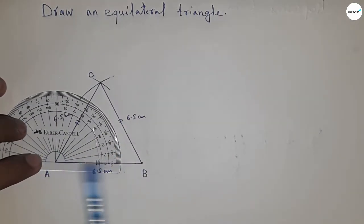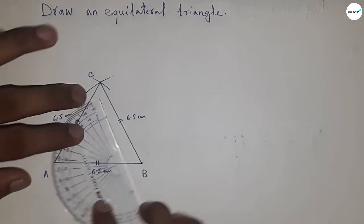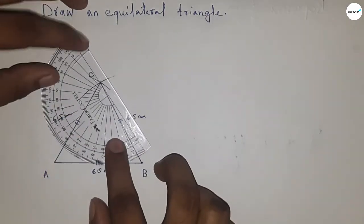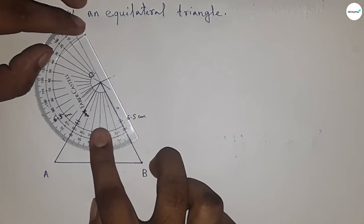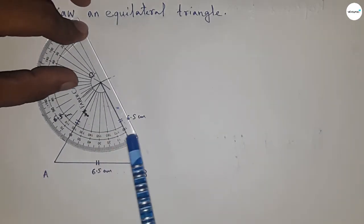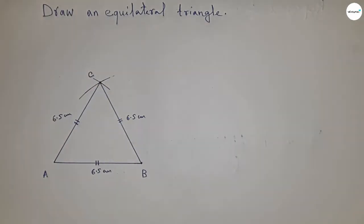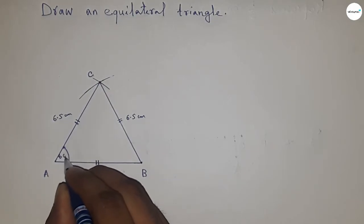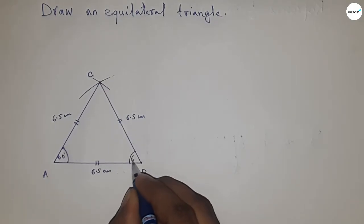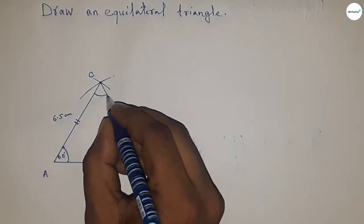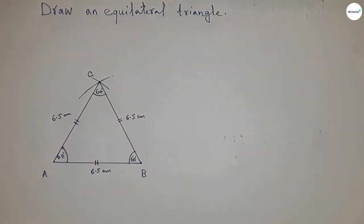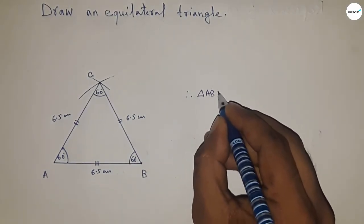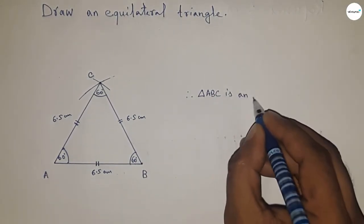So this is 60 degree angle, this is also 60 degree angle, and this is also 60 degree angle. So angle BAC is 60 degrees, angle ABC is 60 degrees, and angle ACB is 60 degrees. Therefore, triangle ABC is an equilateral triangle.